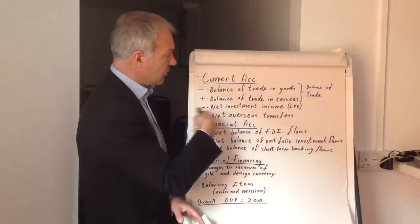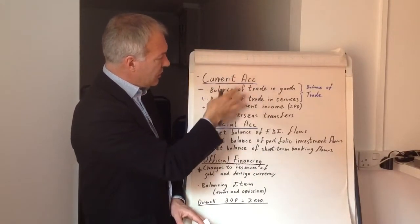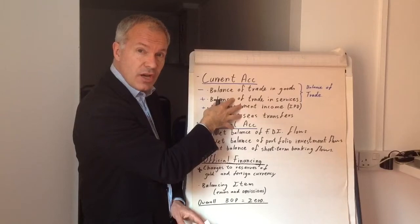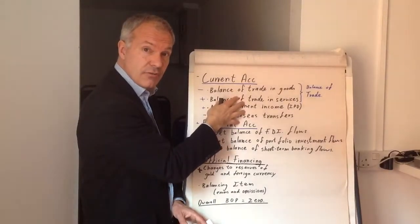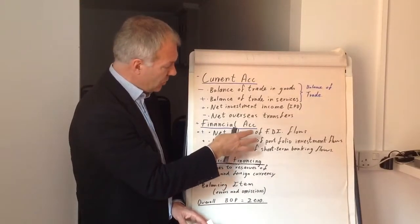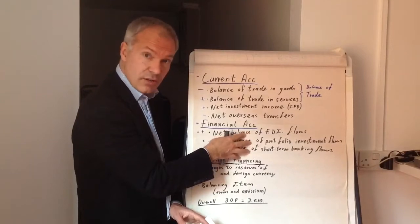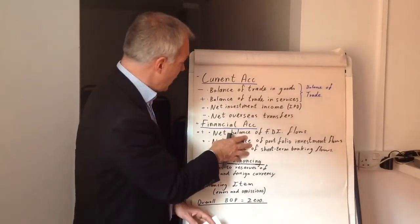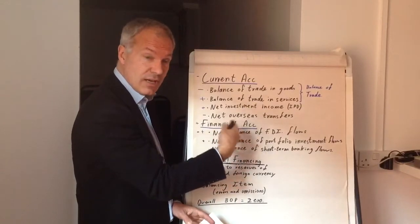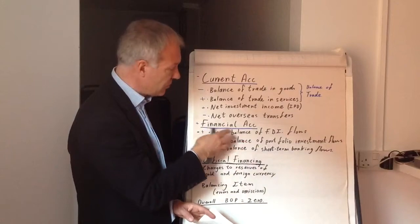The world's current accounts tend to come out at zero. For example, the United States currently has a negative current account, whereas China has a very positive current account. That is matched by the financial account — the US has a significantly positive financial account of inflows, rather like Britain. China has a negative financial account, as the savings they have come out and are invested, for example, in US government bonds.